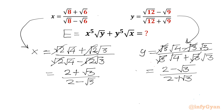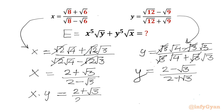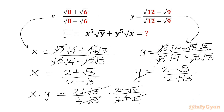So this is our y and this is our x. Now I will calculate x times y first. It will give us 2 plus root 3 over 2 minus root 3 times 2 minus root 3 over 2 plus root 3. These two will be cancelled out, so xy comes out to be 1.